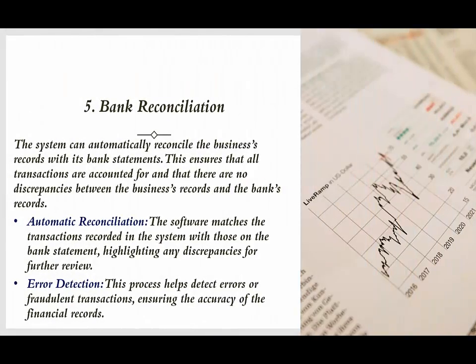Bank Reconciliation: The system can automatically reconcile the business's records with its bank statements. This ensures that all transactions are accounted for and that there are no discrepancies between the business's records and the bank's records. The software matches the transactions recorded in the system with those on the bank statement, highlighting any discrepancies for further review. This process also helps detect errors or fraudulent transactions, ensuring the accuracy of the financial records.